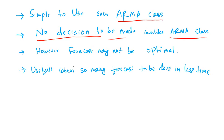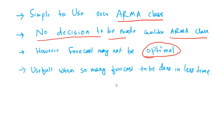However, there is a problem with these kinds of models. They may not be optimal, given the simplistic or oversimplistic nature of these models — the output may not be highly accurate. One has to be careful while using these models to ensure that it is not overly suboptimal. These types of models are useful when there are many forecasts to be done in a very short time — when you have just so many time series and you want to do it in one go quickly — and you cannot go for the ARMA model in such scenarios because it takes a lot of time.